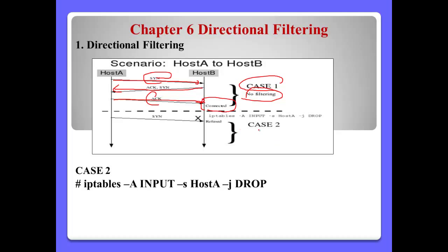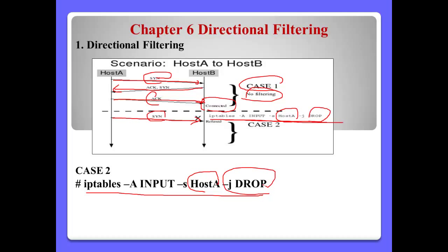Case 2: Now Host B has this kind of rule — iptables -A INPUT, source Host A, DROP. In this case, if we have this kind of rule, this connection will be refused. So if we use iptables -A INPUT, source A will drop.